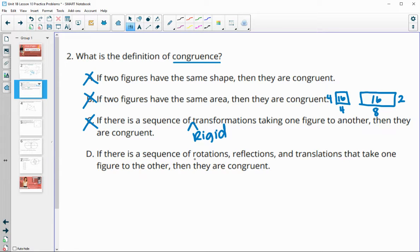The rigid transformations are the rotations, reflections, and translations that we've learned. They've added that in part D, so D is the definition of congruence.